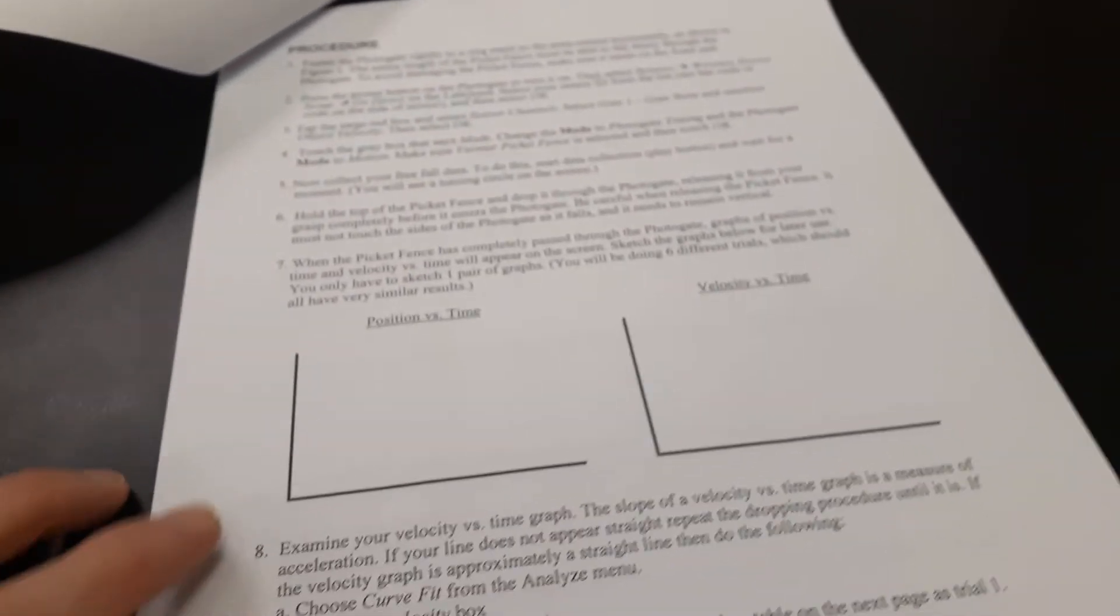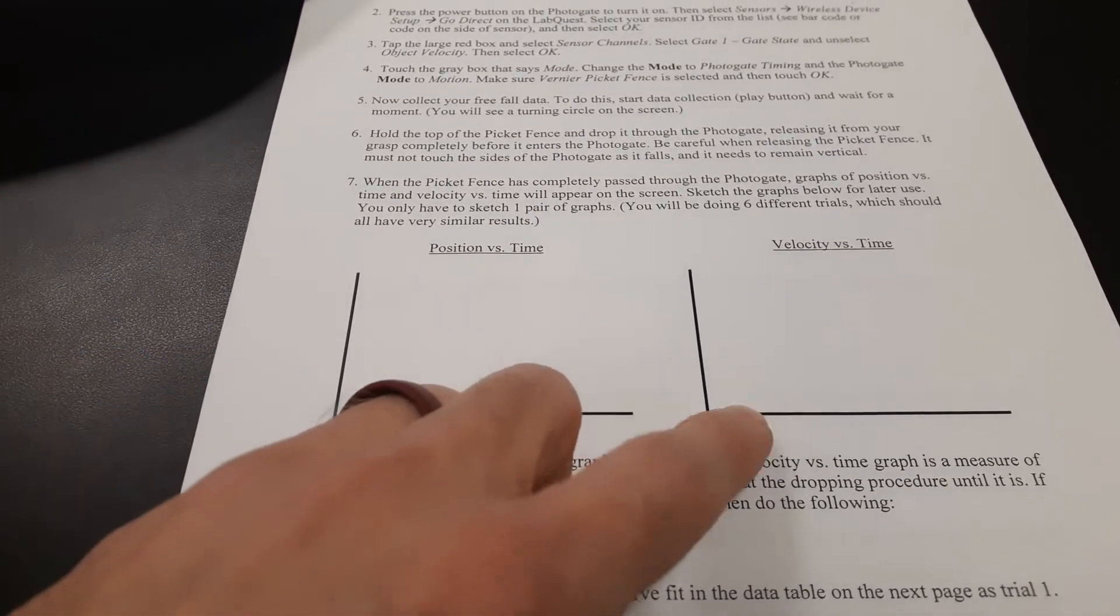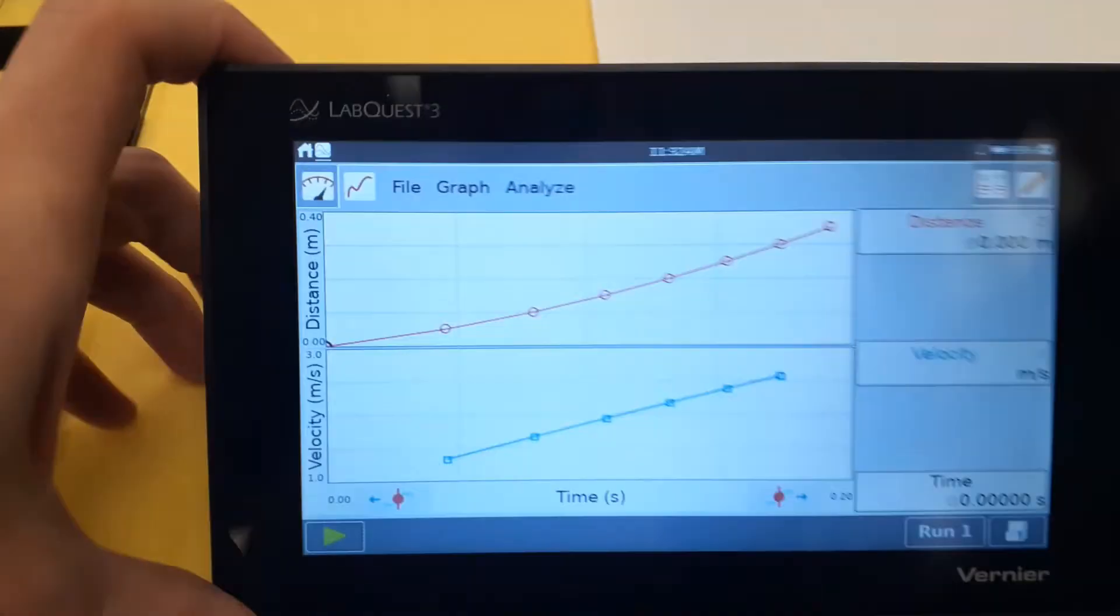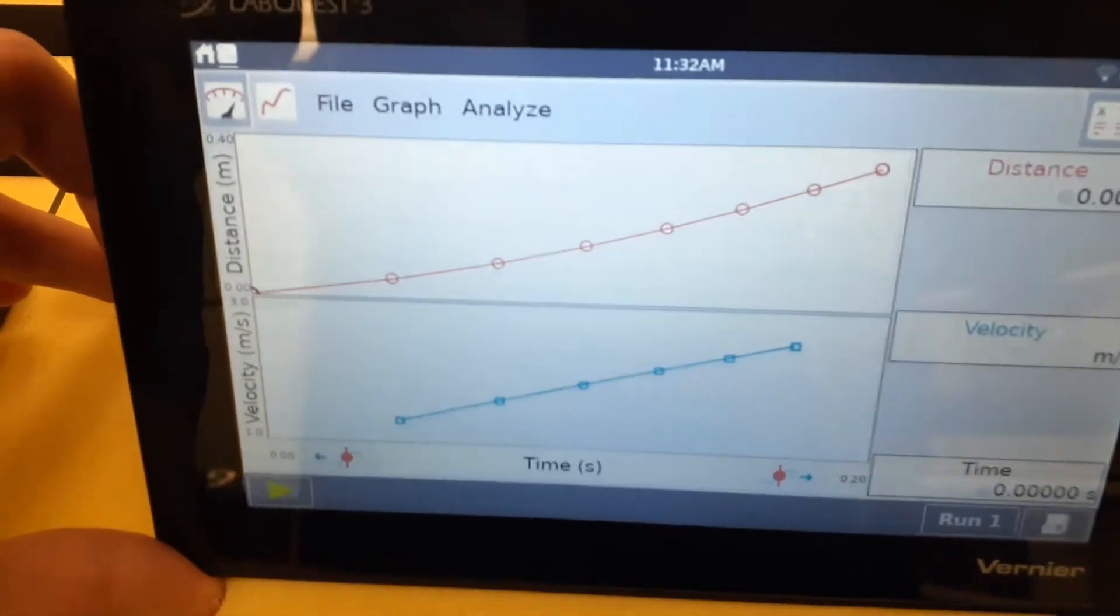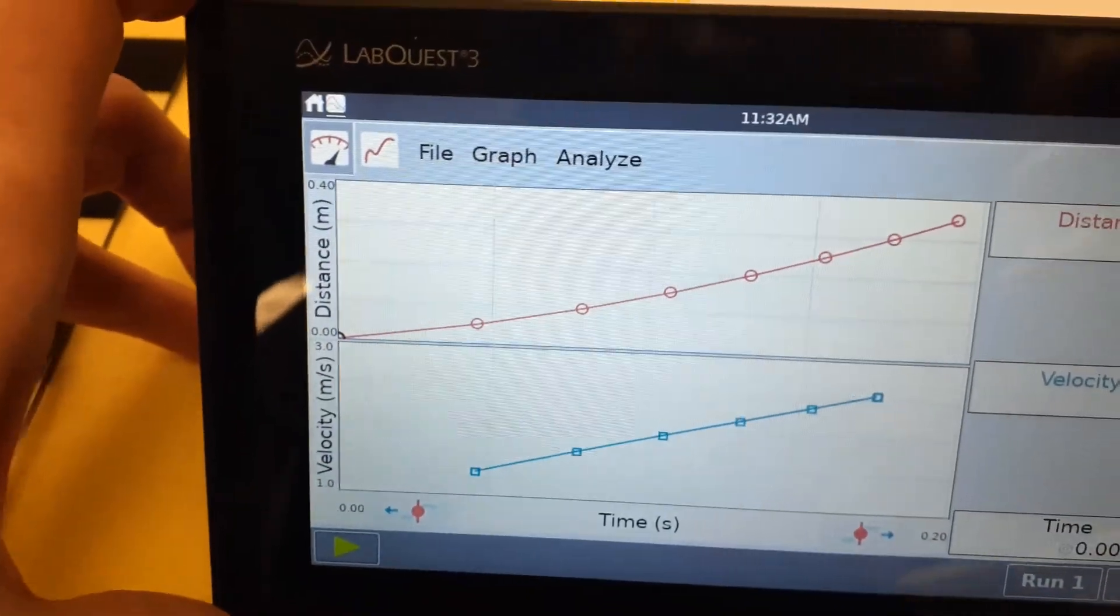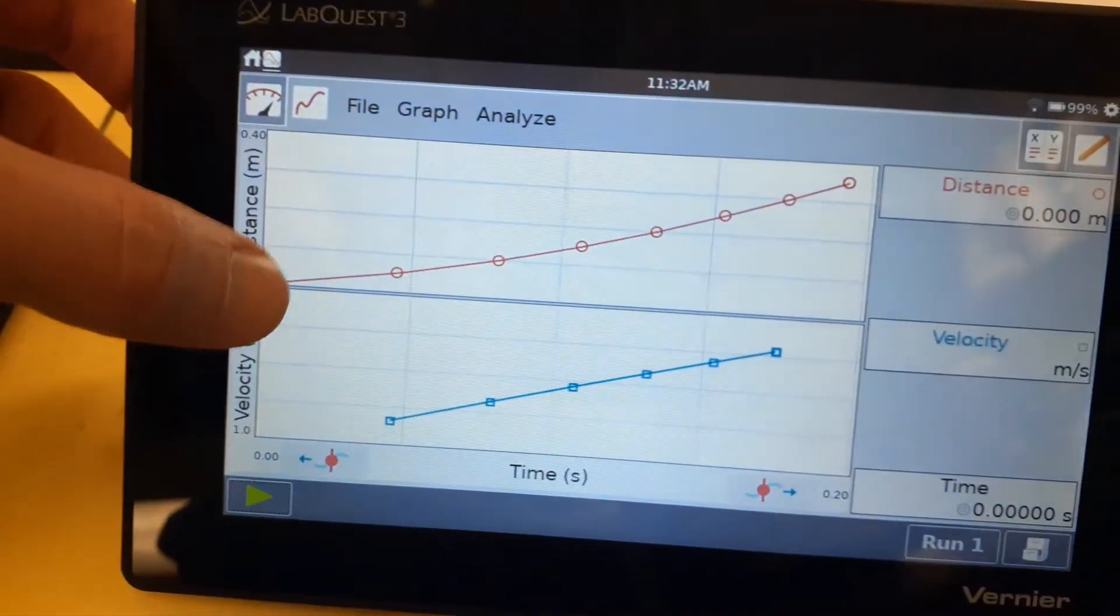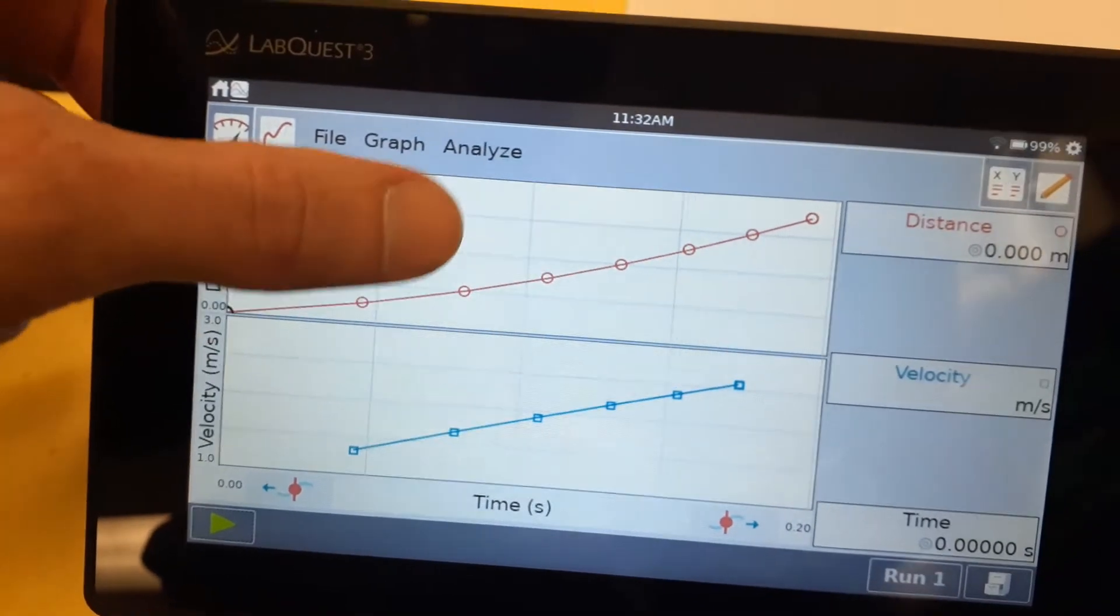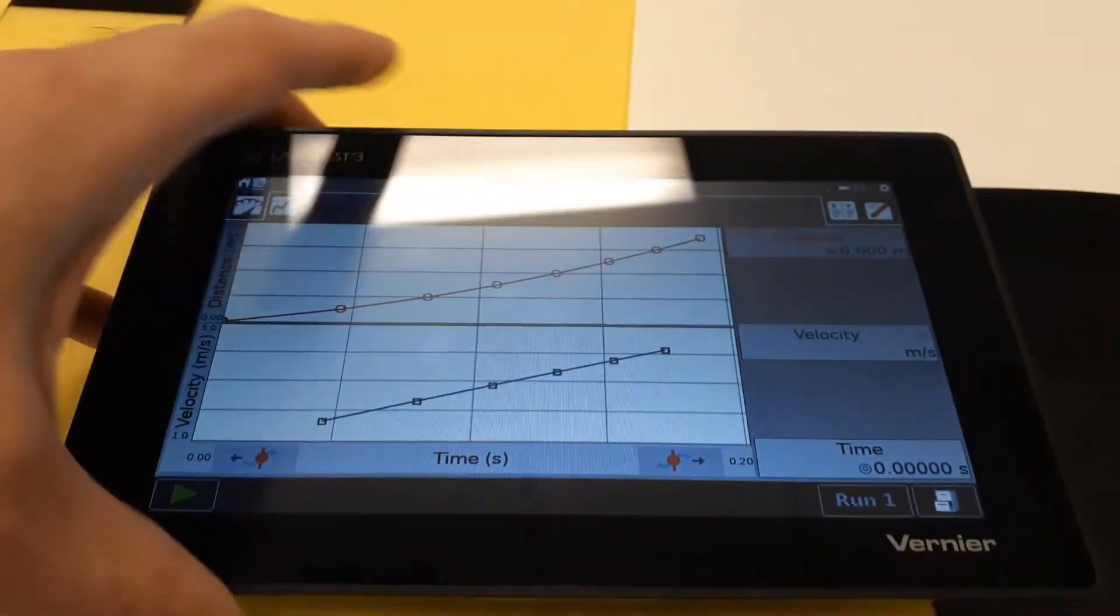Now on your handout, you'll notice it wants you to sketch what those two graphs kind of look like in the first place. Sketch a position time graph, sketch a velocity time graph. You don't have to worry about the numbers on here. What I'm looking for more so is the shape of this graph, that this displacement graph has a little bit of curve to it. It's got a little curve to it because as that picket fence falls, it falls more distance than it did the moment before. So the distance becomes greater and greater.